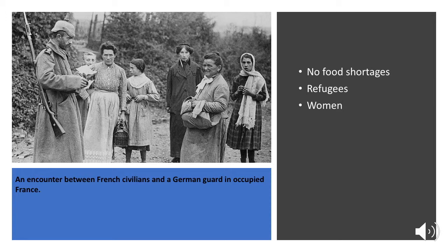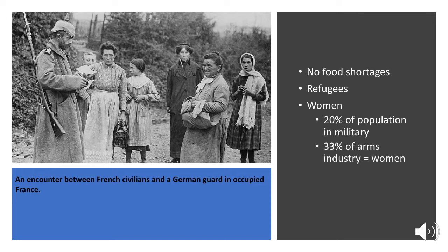In France, about 20% of the population was in the military, so those roles had to be filled by women. About 33% of the people working in the arms industry were women — making guns, making bullets, making tanks, everything. A lot also worked in the countryside, taking over farm labor for husbands and fathers fighting on the front. There was some benefit, as the government did increase farm incomes and allowances to soldiers' wives.